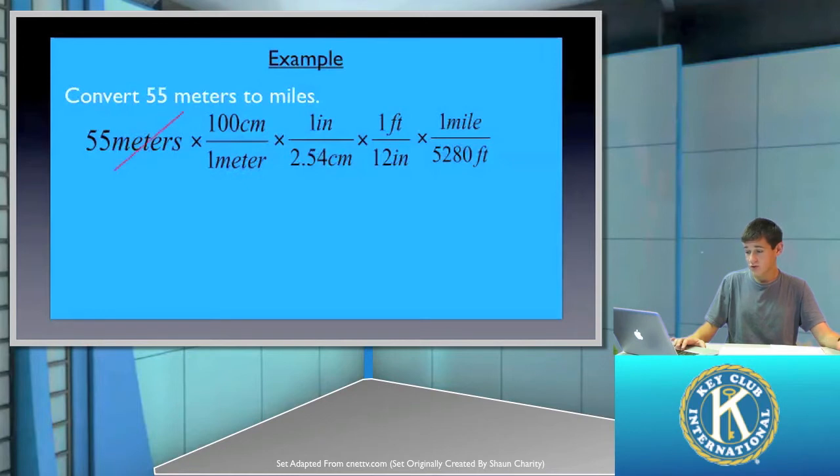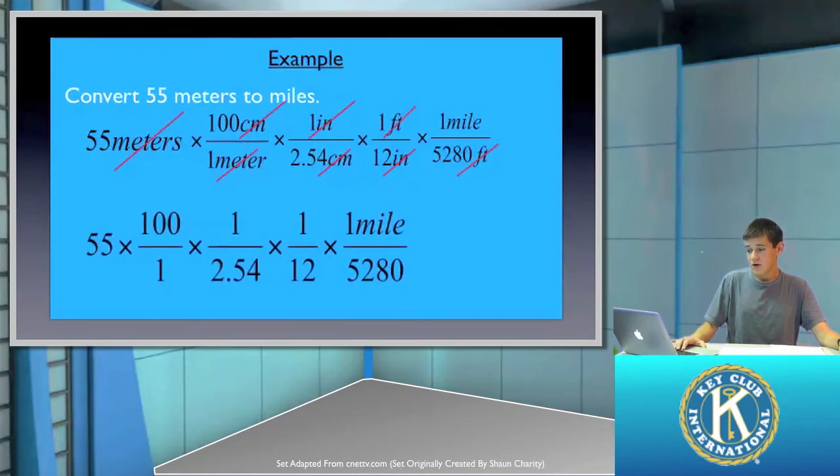Now, once we have our conversions, we see the units cancel out. Meters and meters cancel out. Centimeters and centimeters cancel out. Inches and inches cancel out. Feet and feet do as well, leaving us with miles. From here, we perform the indicated mathematical operations. So in this case, we multiply 55 by 100, then divide it by 2.54, 12, and 5,280, leaving us with our final answer of 0.034 miles.